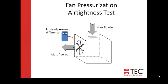We're going to start out with just the basics — a simplified version of what a blower door test is. The mass of airflow in needs to equal the mass of airflow out in a building. The basics of a blower door test is we induce a pressure — we change the pressure in the building by a given amount and then measure the airflow blowing through the fan. We know an equal mass of air leaks in, so we can figure out how tight or leaky a building is.